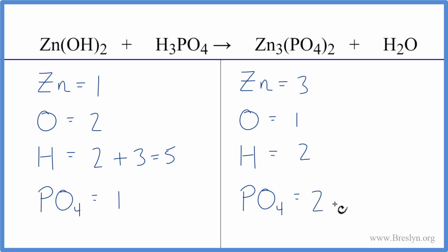Lots going on here. It may be easiest to fix the zinc. Let's leave the oxygens and the hydrogens till last. So we'll fix the zinc by putting a three in front of the zinc hydroxide. So now we have one times the three. That gives us three zinc. Those are balanced.